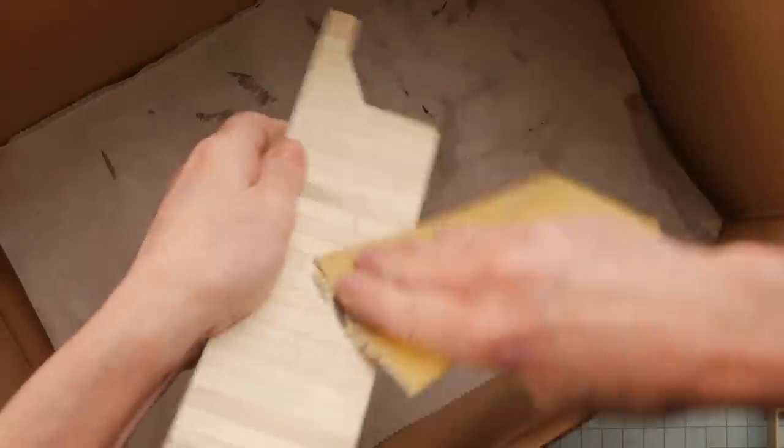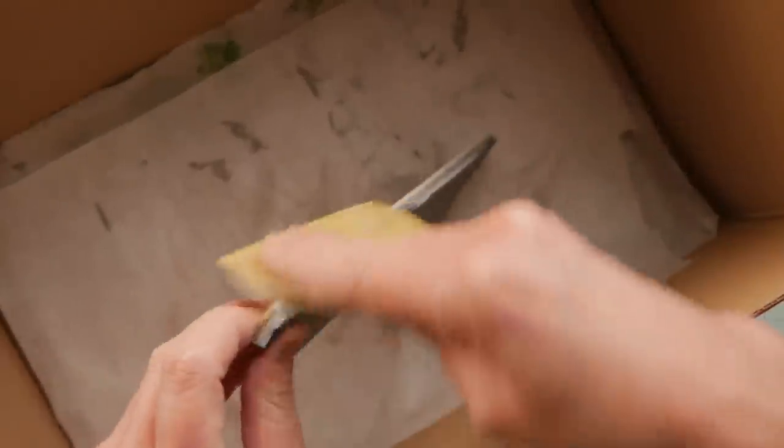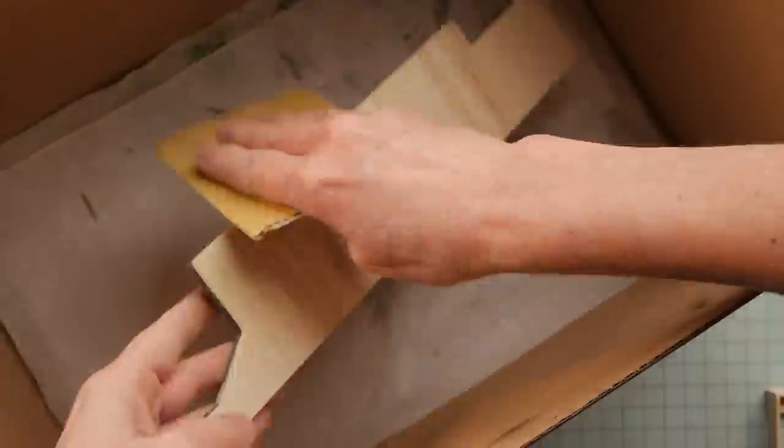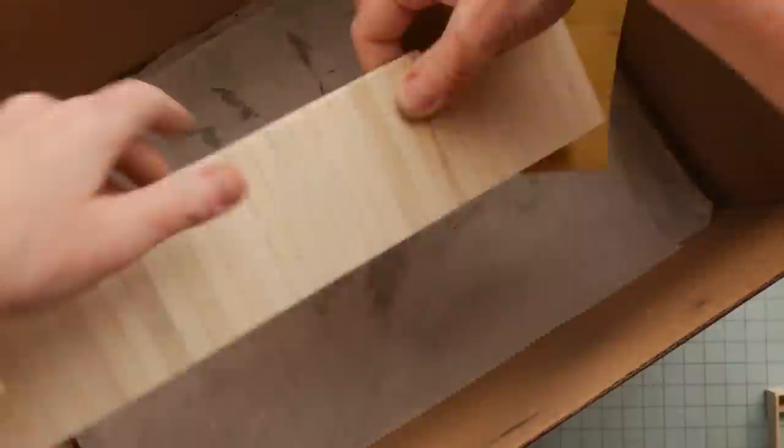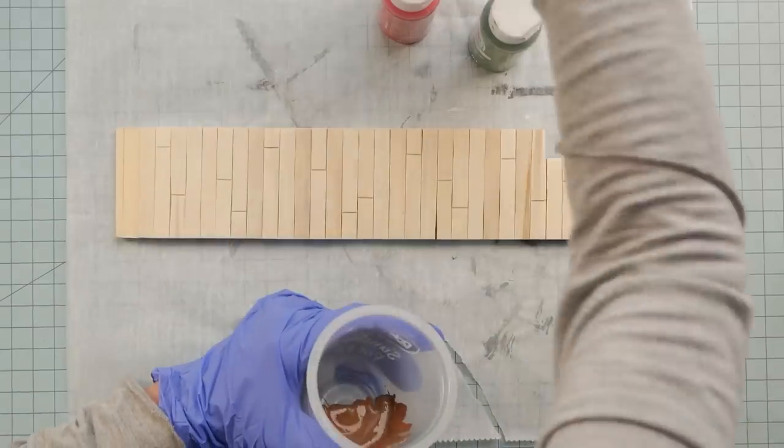Now it's time for a good sanding, just to get any of the rough edges or little splinters all sanded off and get those out of the way. Because they don't make the stain or the paint, whatever you're doing, look very nice if you leave those on there.